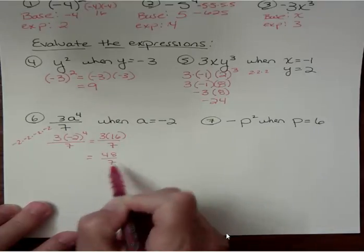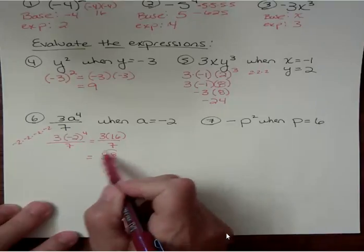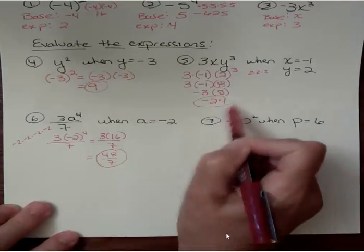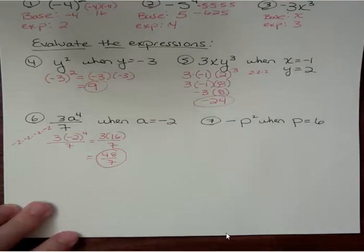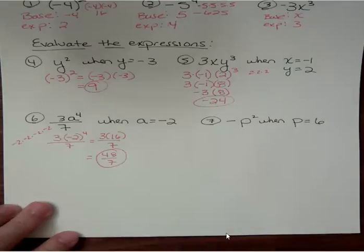And 48 over 7, it's not an exact number, so I'm going to leave it as an improper fraction. It's great when we get an integer or a whole number, but if we don't, we don't want to change everything into decimals and mixed numbers. Leave it. Simplified form means there's no common factors between the top and the bottom, and there is not here.